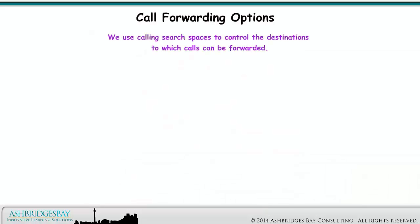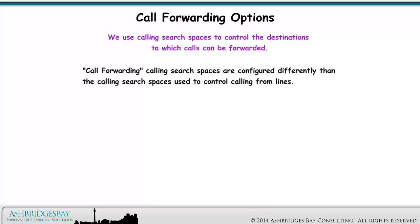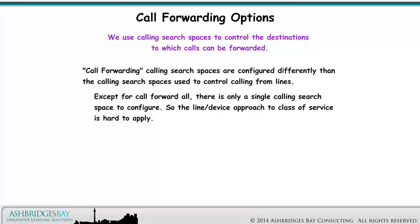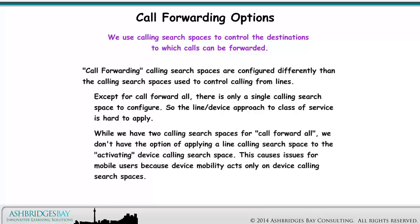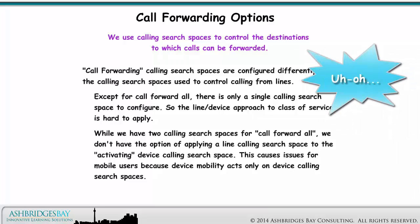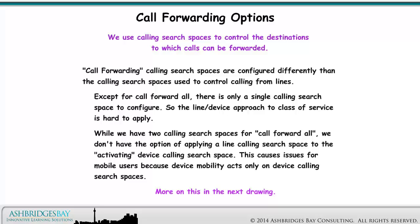We use calling search spaces to control the destinations to which calls can be forwarded. Call forwarding calling search spaces are configured differently than the calling search spaces used to control calling from lines. Except for call forward all, there is only a single calling search space to configure, so the line device approach to class of service is hard to apply. While we have two calling search spaces for call forward all, we don't have the option of applying a line calling search space to the activating device calling search space, which causes issues for mobile users because device mobility acts only on device calling search spaces.